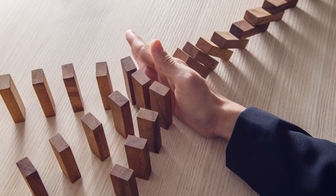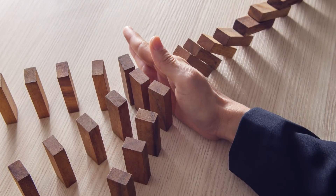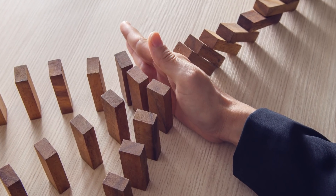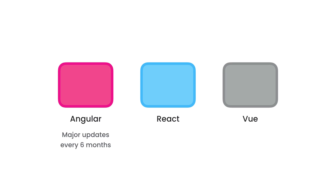The other factor to consider is the stability of a framework. You want to make sure the framework or library you choose introduces minimal risks to your development process. The Angular team has planned major updates every six months. During these major upgrades, you will experience breaking changes, and you have another six months to make the necessary changes before the old APIs are deprecated — giving you a total of one year. With React, you have to worry less about this because Facebook takes the stability of React seriously. As for Vue, 90% of the APIs are the same when migrating from version 1 to 2, and they also have a migration helper tool.